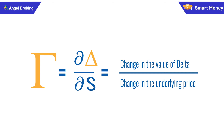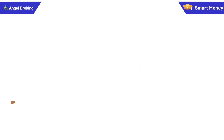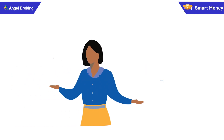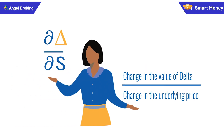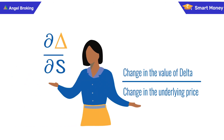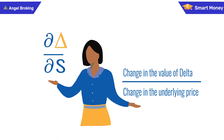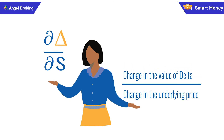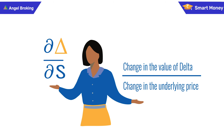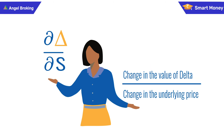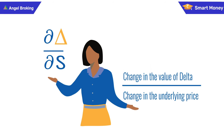Gamma captures the rate of change of delta. It helps us answer questions such as: what is the expected value of delta for a given change in the underlying? This is how delta and gamma as option Greeks capture the effect of the direction of the market.